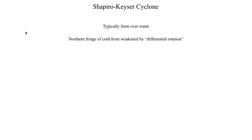In the case of a Shapiro-Kaiser cyclone there's a mechanism that actually weakens the northern fringe of the cold front. The northern edge of that cold front — the edge that's closest to the cyclone — is weakened by what's referred to as differential rotation. This essentially carries some of the warmer air near the warm front, which wraps itself around the center of the cyclone to form what's referred to as a bent back front. This is also what typically weakens the northern fringe of the cold front.